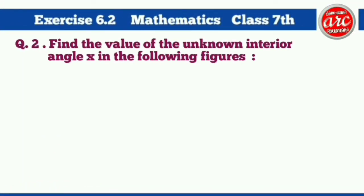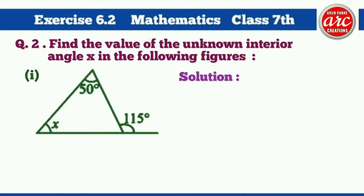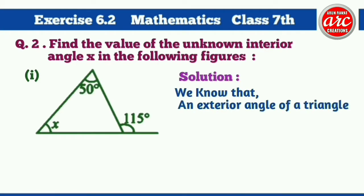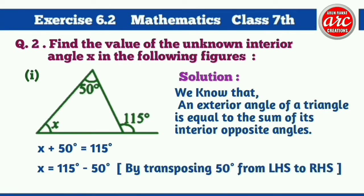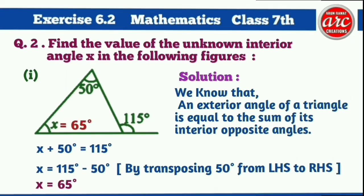Question number 2: find the value of the unknown interior angle X in the following figures. Part 1 solution: We know that an exterior angle of a triangle is equal to the sum of its interior opposite angles. So X plus 50 degrees is equal to 115 degrees, or X is equal to 115 degrees minus 50 degrees. Hence, X is equal to 65 degrees.